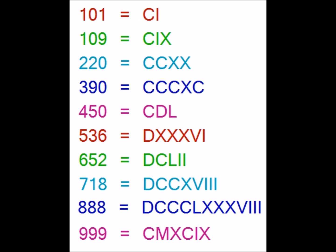For 450, we use CD for 400 and L for 50, so CDL gives 450. For 536, we have D for 500, XXX for 30, and VI for 6, so DXXXVI indicates 536.